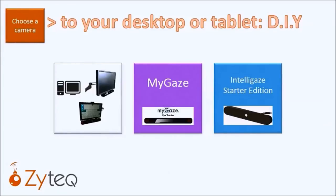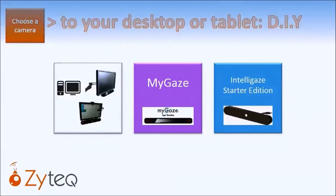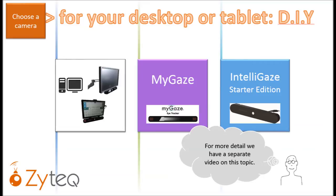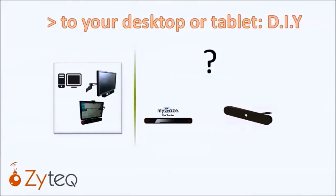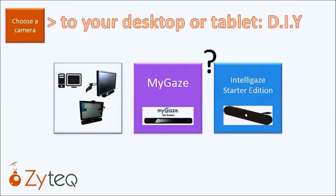In setting up an eye gaze system using your desktop computer or a Windows tablet, the next consideration is to choose between the two cameras available at Zytec that are suitable for the education setting: the MyGaze Eye Tracker and the IntelliGaze Starter Edition camera. Both are made in Germany, and both simply plug into the USB port and are supplied with their relevant installation software. So what is the difference between these cameras and which one will be most suitable for your needs? We have a separate video with more technical and application detail, but here is a simplified explanation.